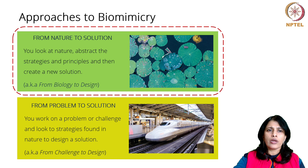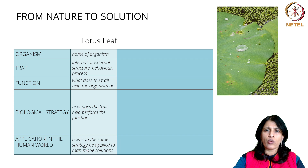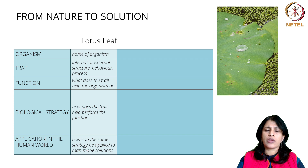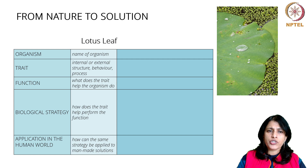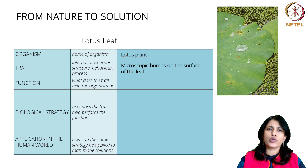Let us look at the nature to solution approach first, using the lotus leaf example and a table to walk through the sequence. The organism is the lotus plant. A trait is any characteristic, attribute, behavior, or process that the organism exhibits — any internal or external structure or attribute that you can observe. In the case of the lotus leaf, the trait is the microscopic bumps on the surface of the leaf.